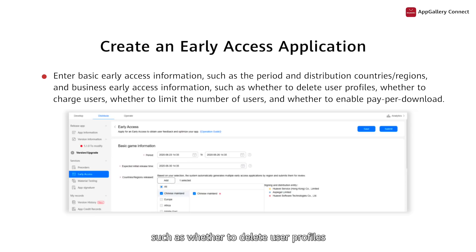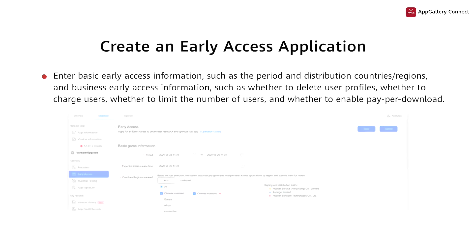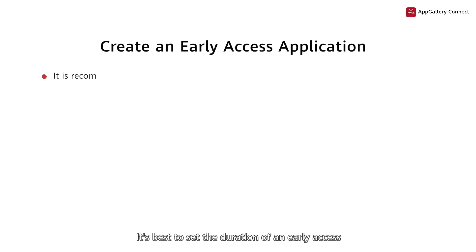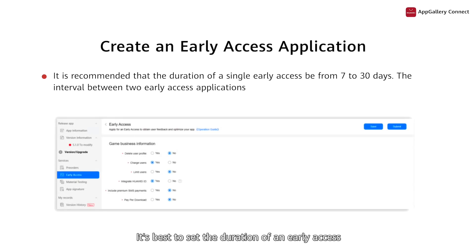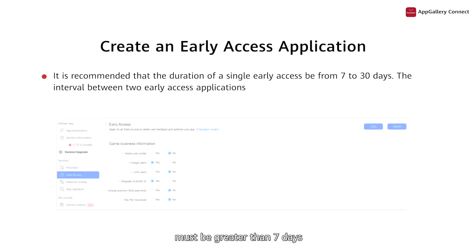You can also configure basic information, such as whether to delete user profiles, whether to charge users, whether to limit the number of users, and whether to enable pay per download. It's best to set the duration of an early access to between 7 and 30 days, and the interval between two early accesses must be greater than 7 days.